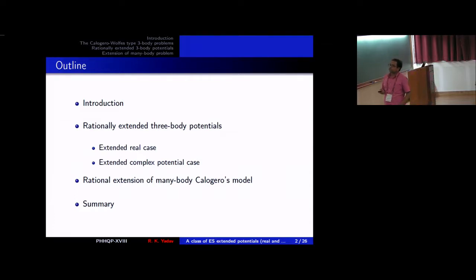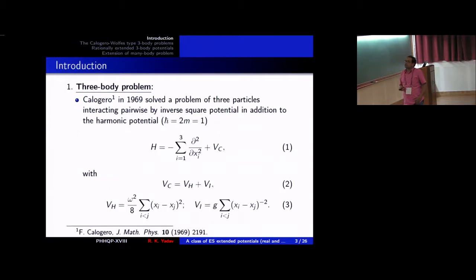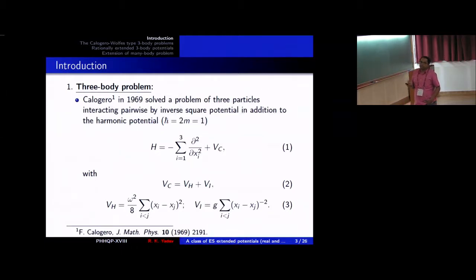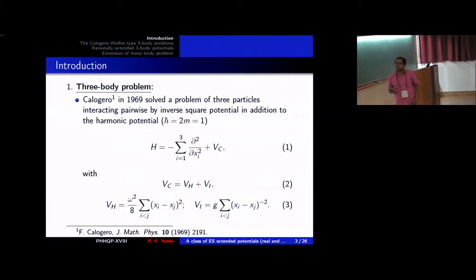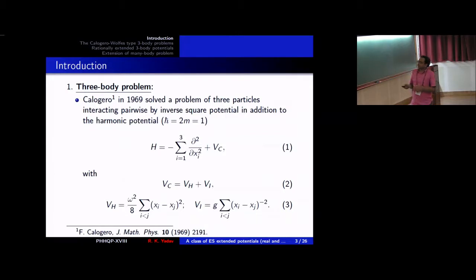This is the well-known three-body problem — the Calogero three-body problem. The Hamiltonian for this three-body system is given here, where p_i are momenta, and it contains harmonic terms and an inverse square potential.